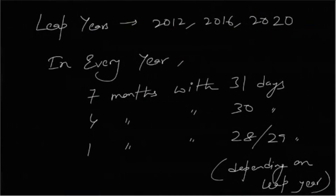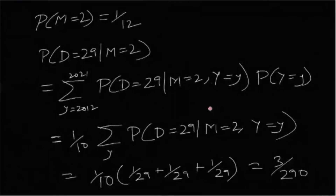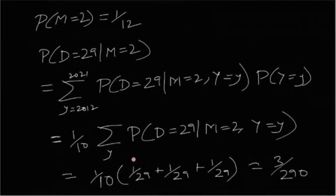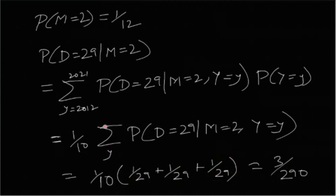For each leap year (2012, 2016, 2020), P(D=29 | M=2, Y=leap) = 1/29, since February has 29 days and each day is equally likely. For non-leap years the probability is 0. So the sum gives 3 × (1/29), and with the 1/10 factor, P(D=29 | M=2) = 3/290.